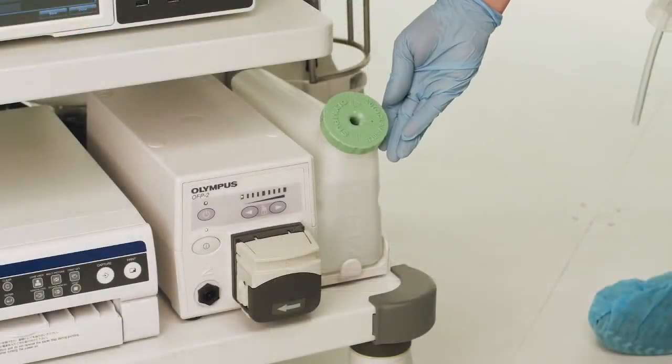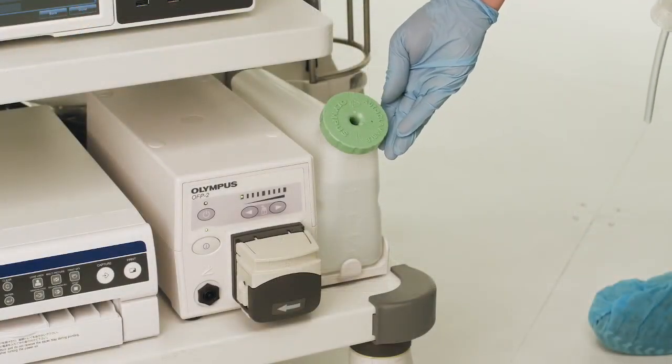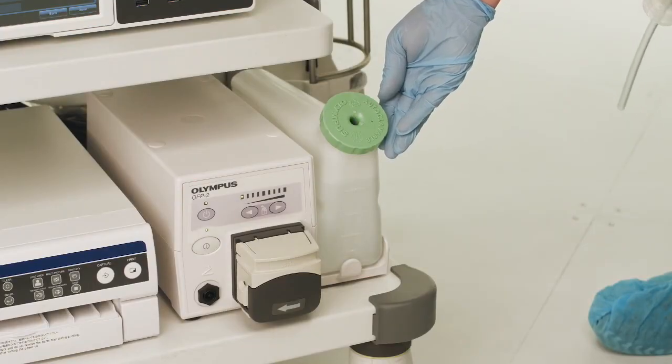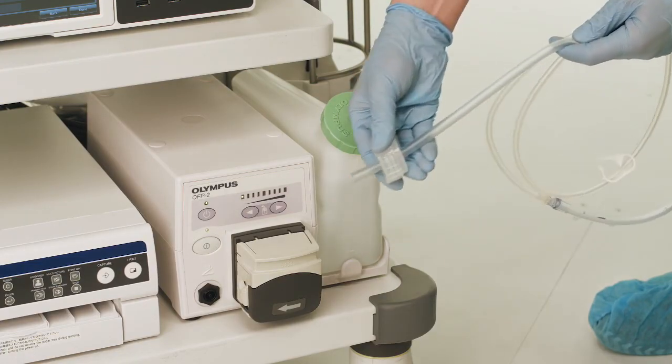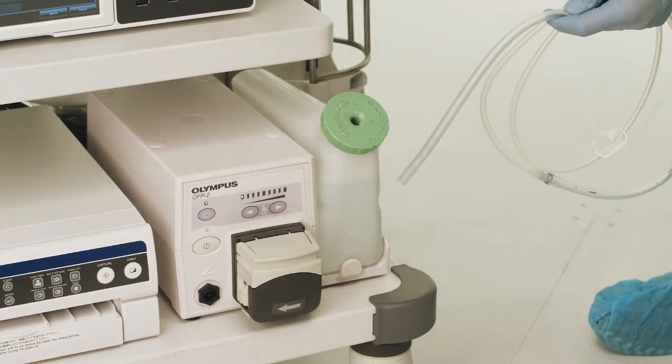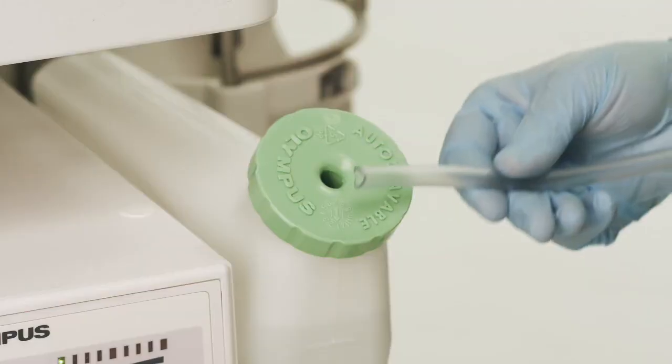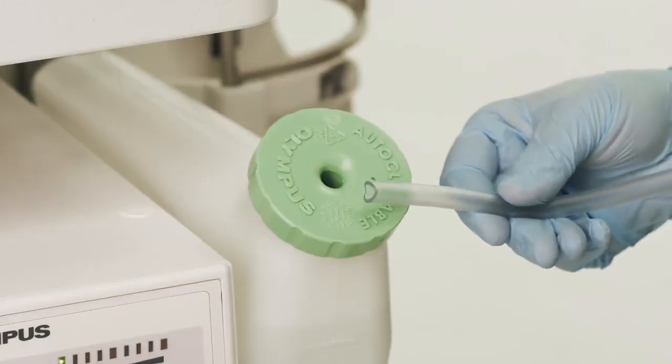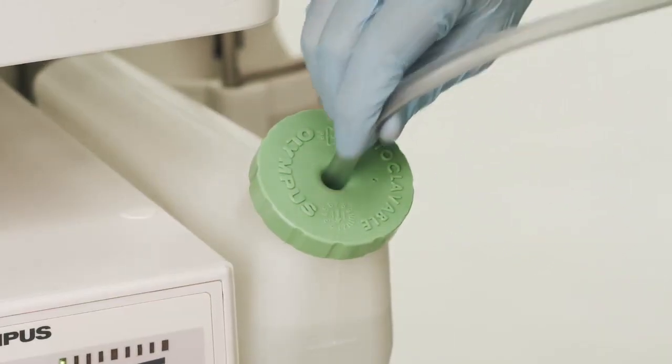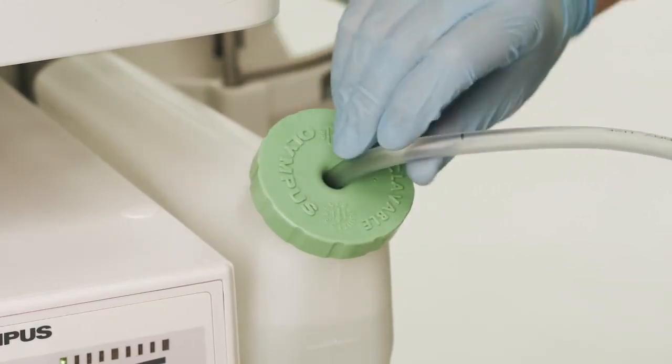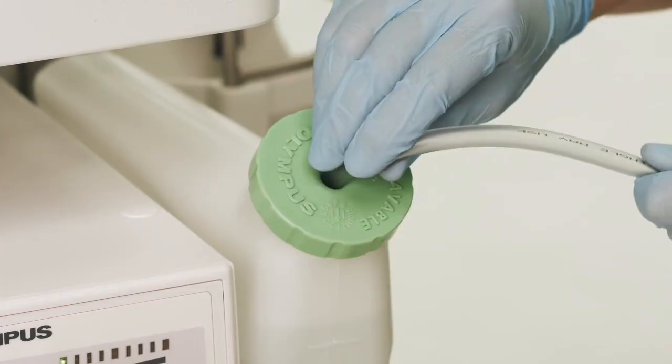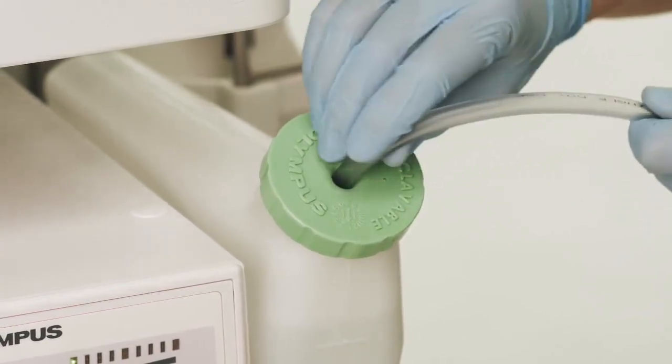If you will be using the water bottle provided for use with your OFP or OFP2 Olympus endoscopic flushing pump, then remove the plastic cap provided with the auxiliary channel water tube set and discard it. You will then thread the scallop cut end of the auxiliary water channel tube set through the water bottle cap on your OFP or OFP2 into the bottle up to the first indicator line marked on the tube.